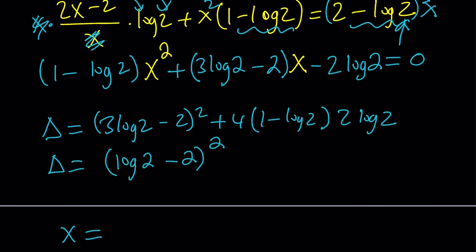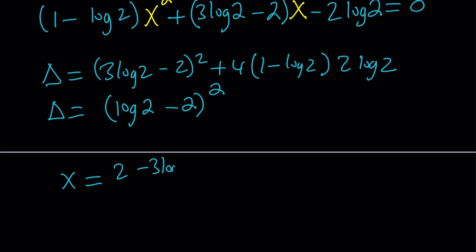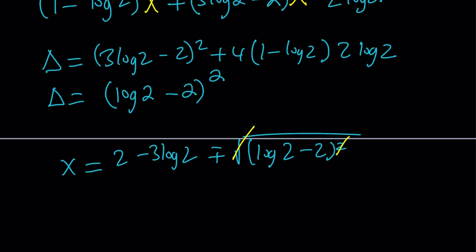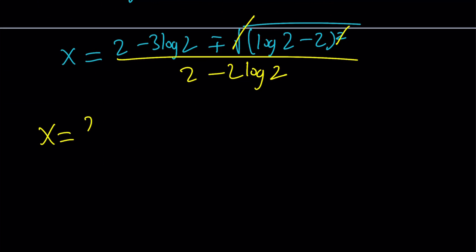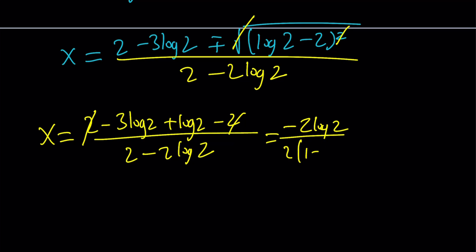We're going to plug in x equals negative b. So we're going to negate the coefficient of x, which is 2 minus 3 log 2 plus minus the square root of this. Obviously, the square root and the square is going to cancel out, but leaving us with a plus minus sign. We already have that, so we can cross these out. Keep that in parentheses and that's all over 2a, which is 2 minus 2 log 2. Now let's simplify this or split it up into two solutions.